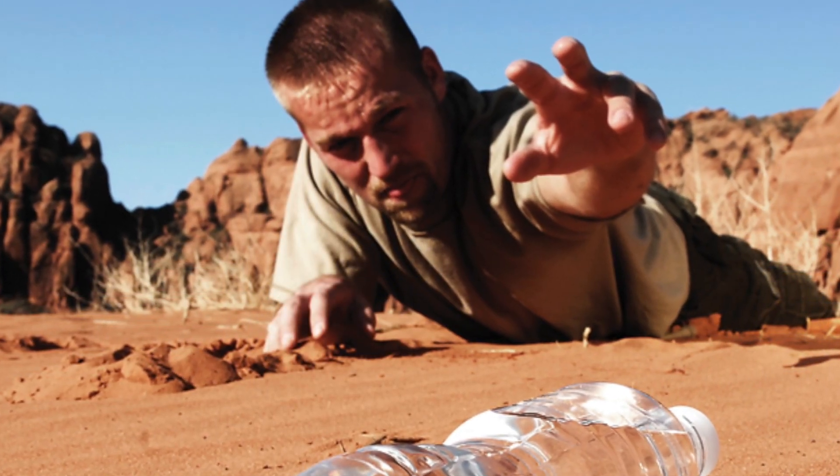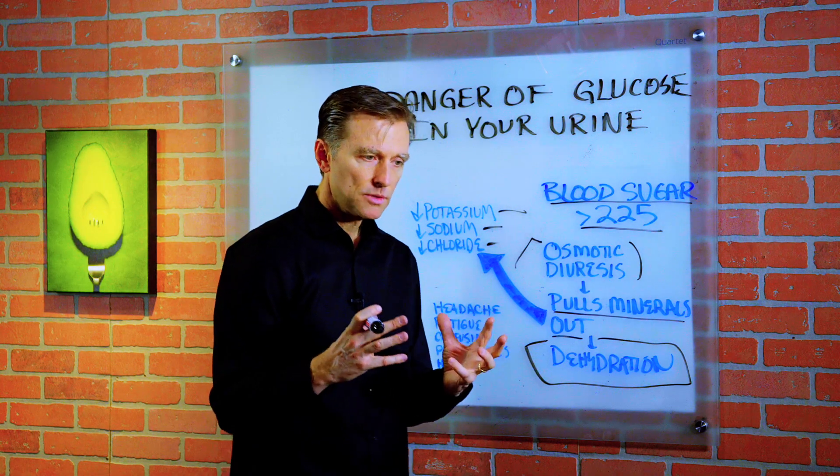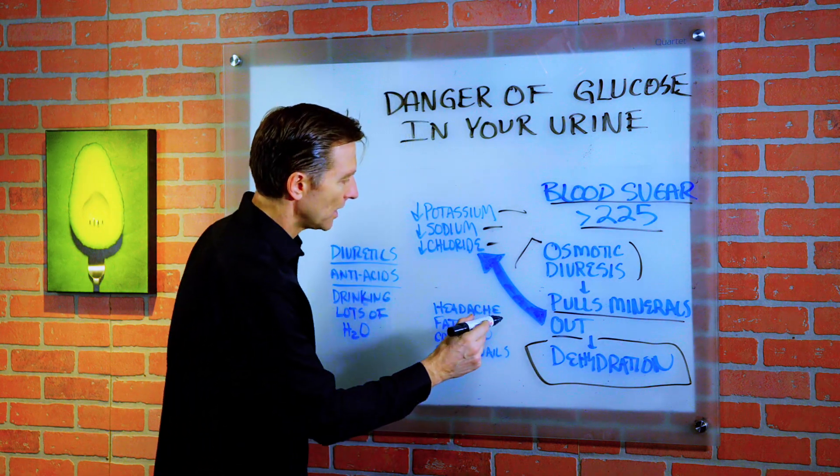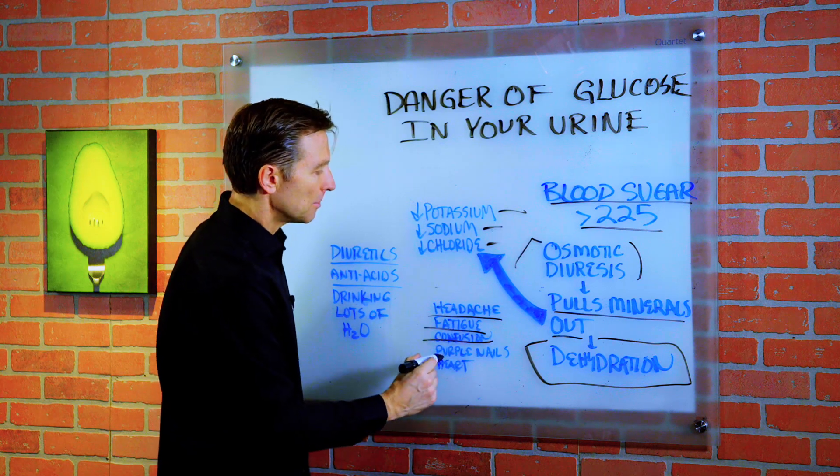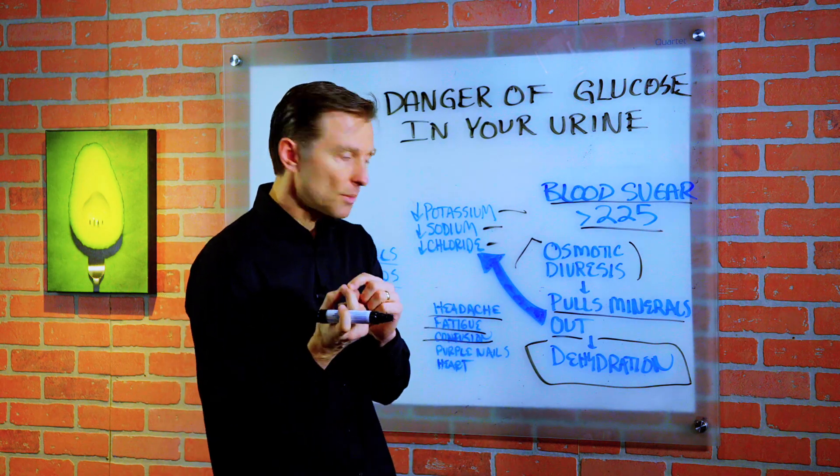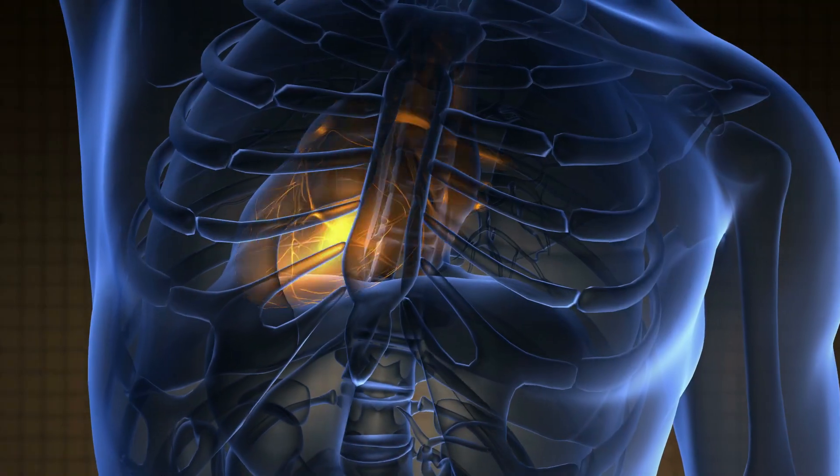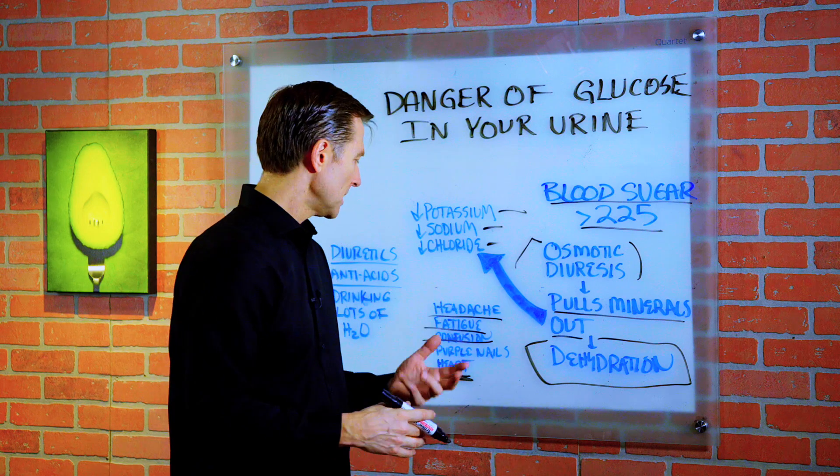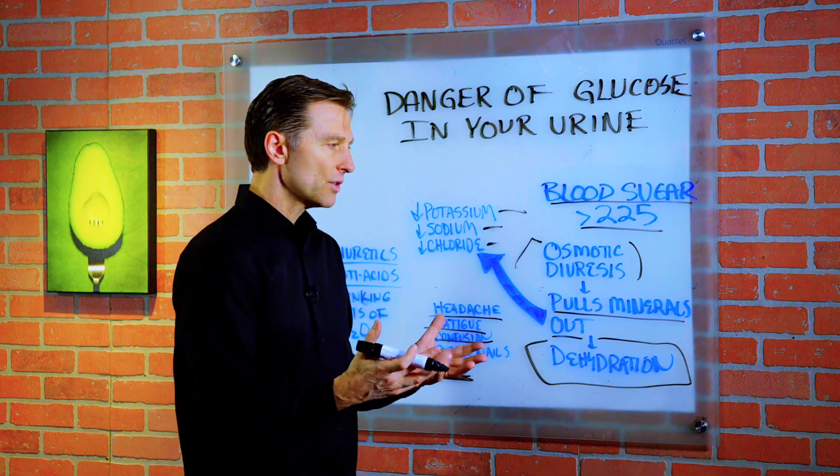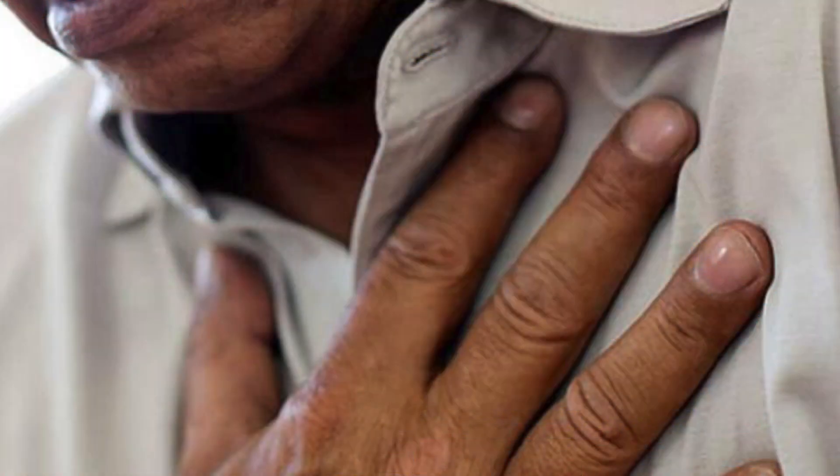That's what happens with a diabetic. And not having the correct mineral and fluid ratio gives you a headache. You can start having fatigue, confusion. Your nails become purple. That's one of the symptoms. And a lot of heart problems, arrhythmia problems, because you need these electrolytes to keep the heart in rhythm. And so it sets you up for increasing risk for having a heart attack.